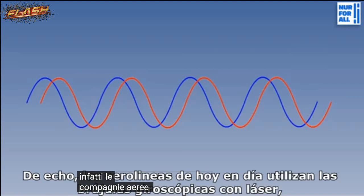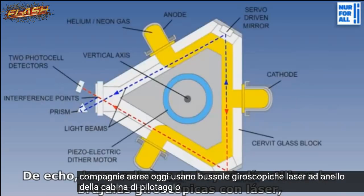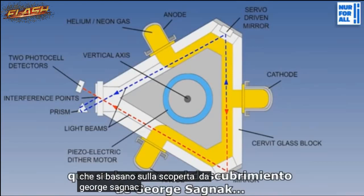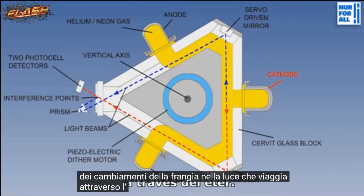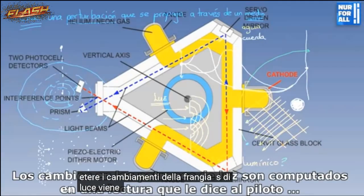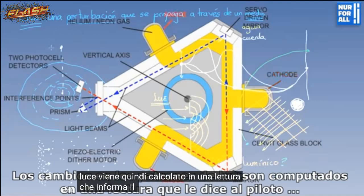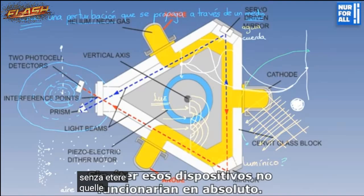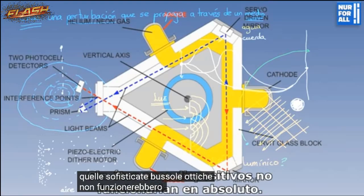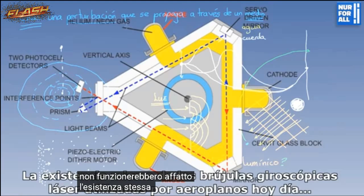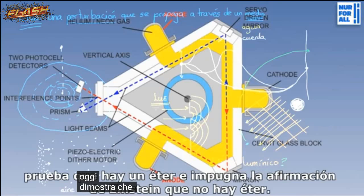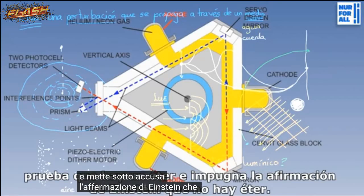Indeed, airlines today use cockpit ring laser gyroscopic compasses that are based upon the discovery by George Sagnac of fringe changes in light traveling through the ether. The changes in the fringes of light are then computed into a reading which tells the pilot about changes in bearing of the airplane. Without an ether, those sophisticated optical compasses would not work at all. The very existence of the laser gyroscopic compasses used by airplanes today proves that there is an ether and impeaches Einstein's claim that there is no ether.